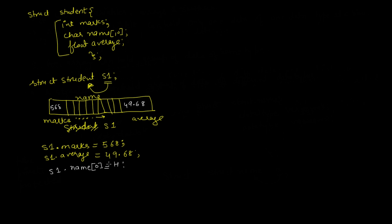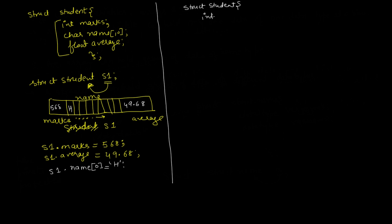For example, you can store 'h' at index location 0 of the name, and that 'h' will be stored there. This is how you can declare a structure and store different types of data within it. Now let us write a simple program. We create a structure 'struct student' which has int id, then character name[20], and then float percentage.